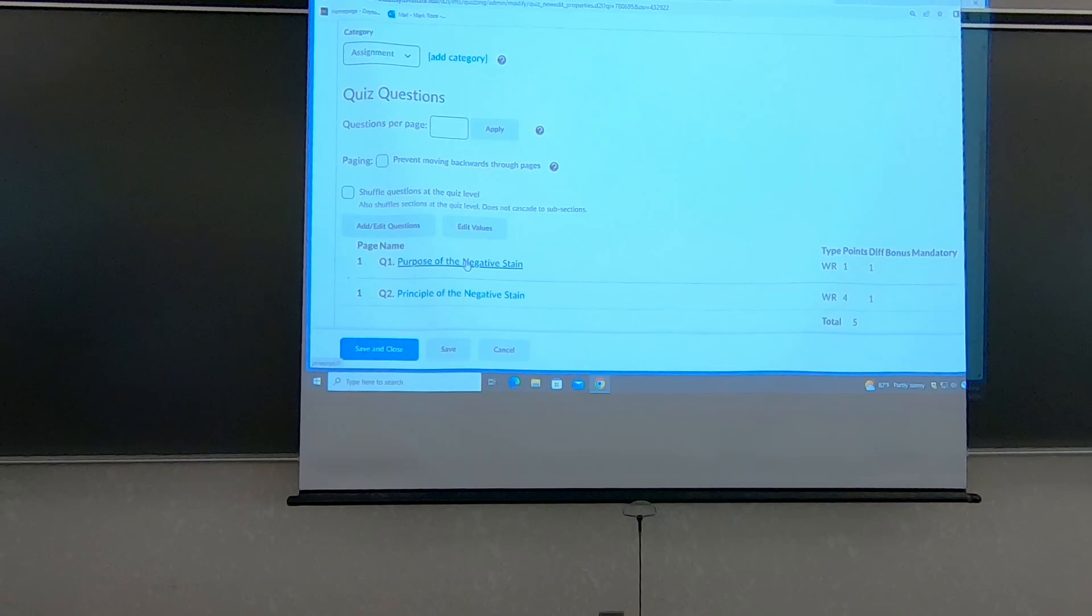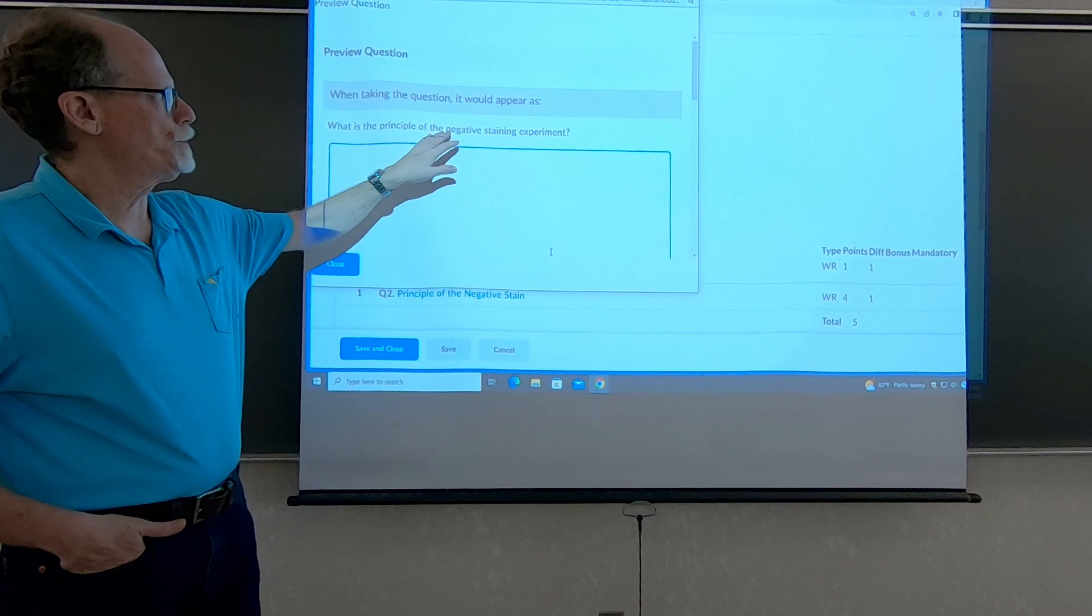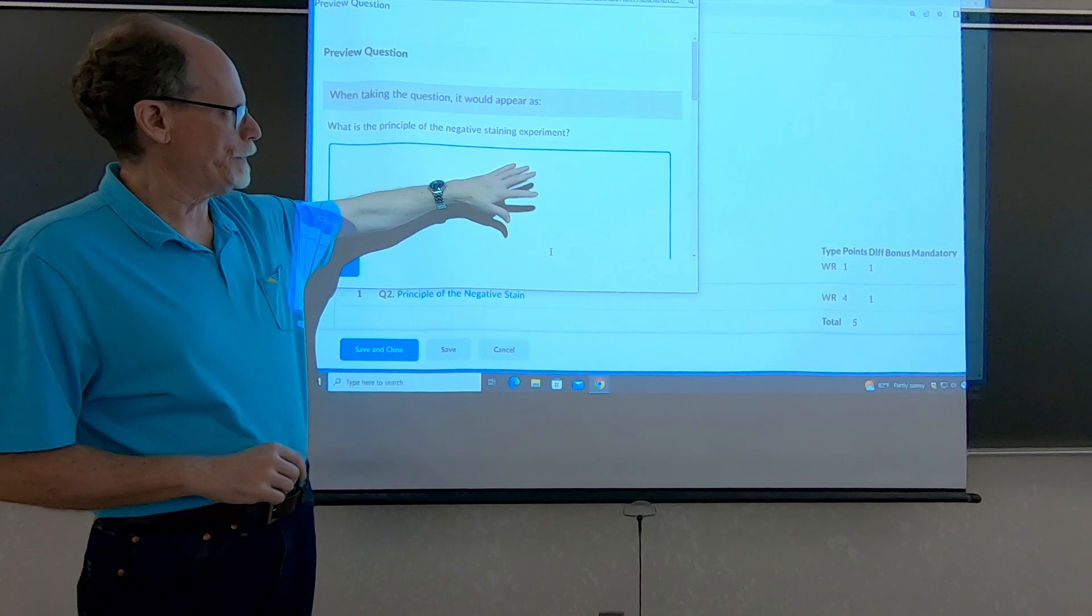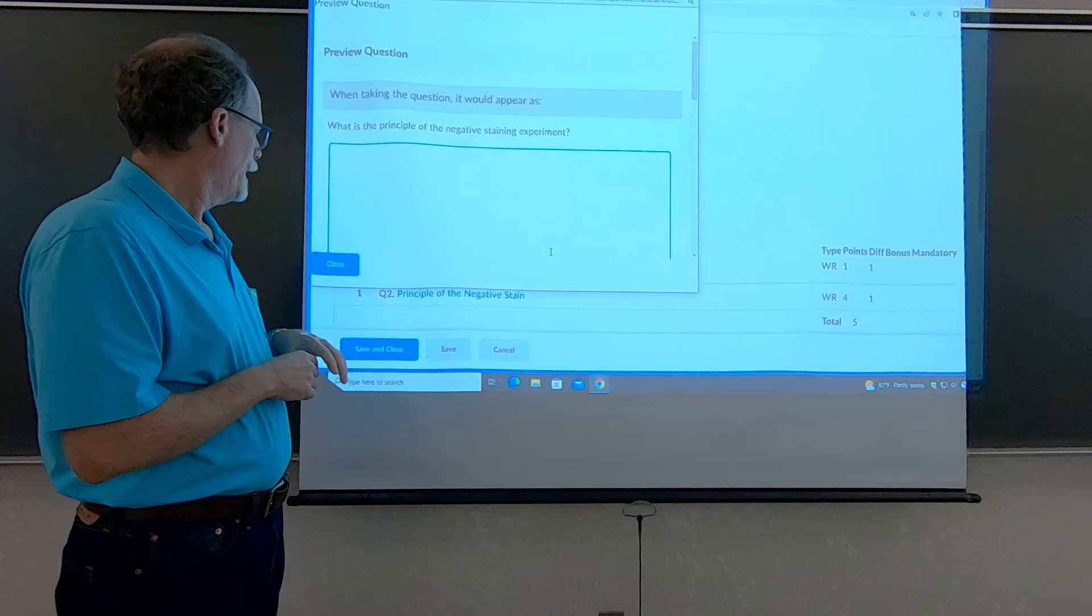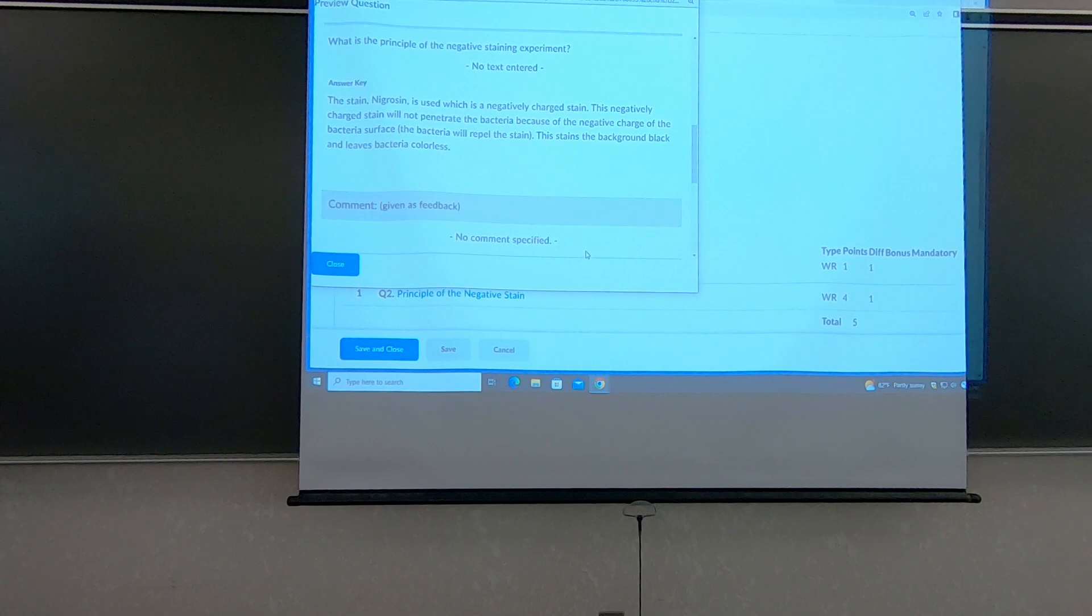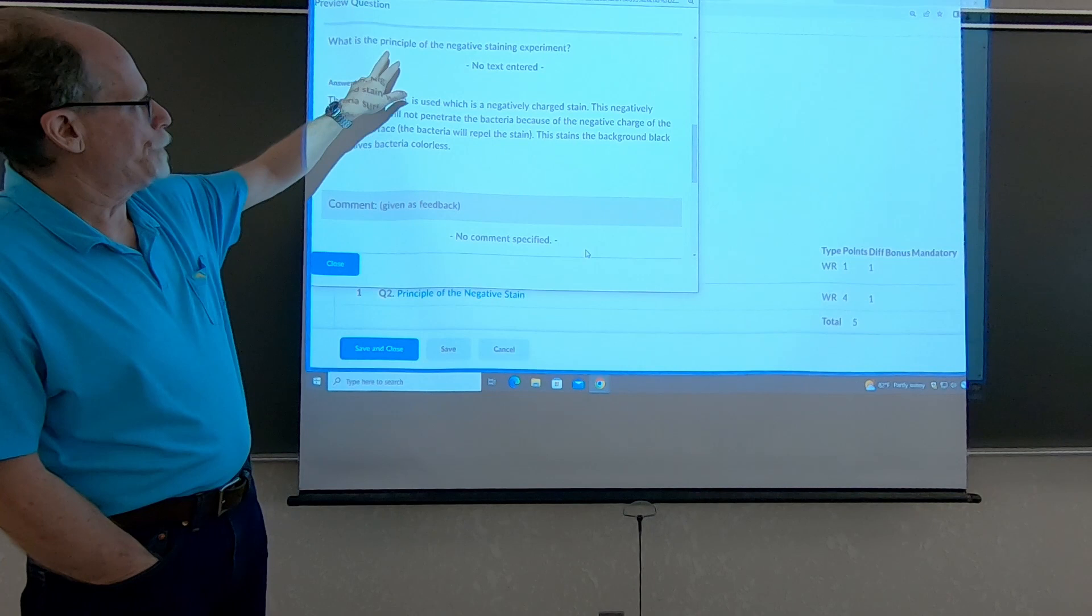It'll say what is the principle of the negative stain. For the Gram stain PMP, it'll say what is the principle of the negative stain. There'll be a window to put your principle there. The reason that this is in the quiz section instead of the assignment section is because it lists the answer. For the principle for the negative stain would be: nigrosin, which is a negatively charged dye. Because it's negatively charged, it will not penetrate the bacteria because they're negatively charged, so the bacteria don't get stained.